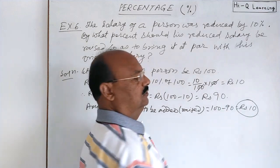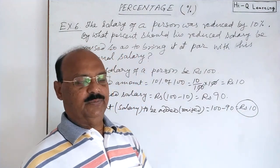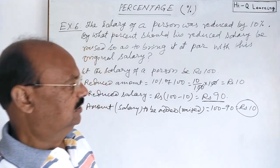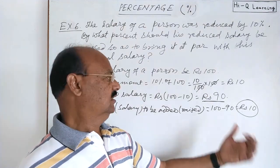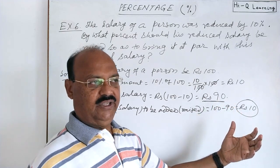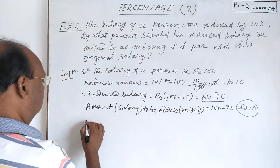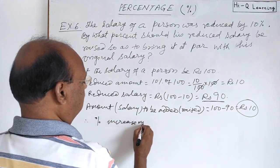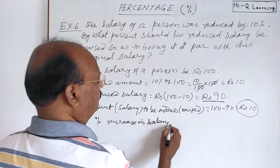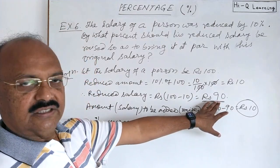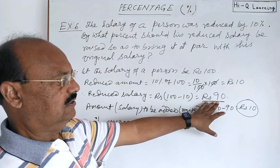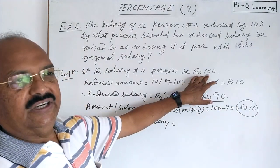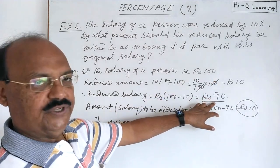The amount which is increasing — and percentage on which number? On 90. That means: 10 is how much percent of rupees 90? That is what we have to calculate. Therefore, the percentage increase in salary: 90 is the net salary at present, and we are adding to reach 100. For the calculation of percentage, we calculate on the basis of the current salary of rupees 90.